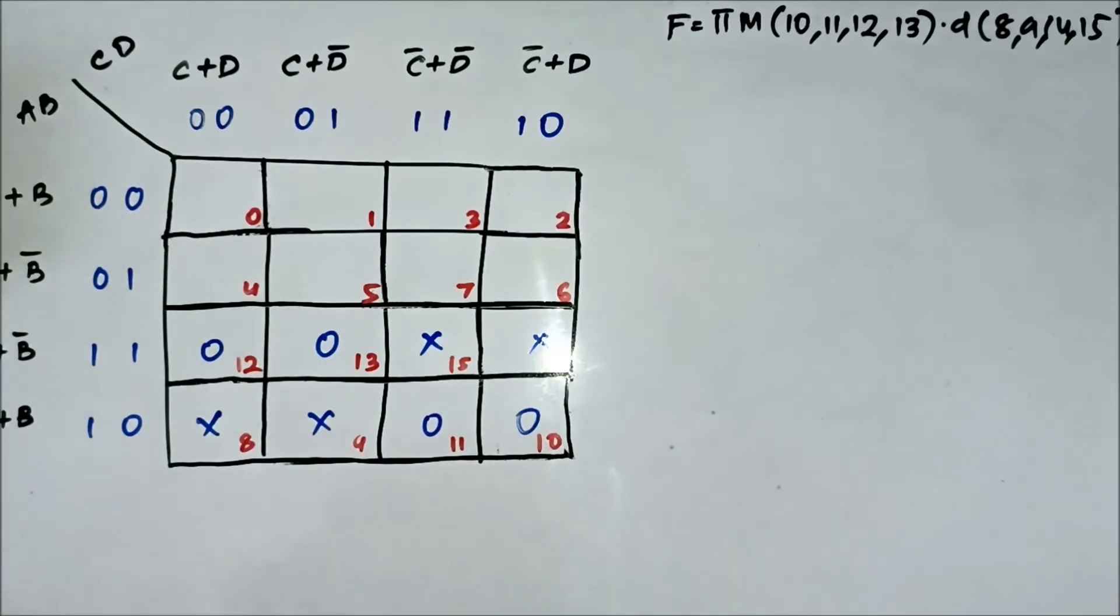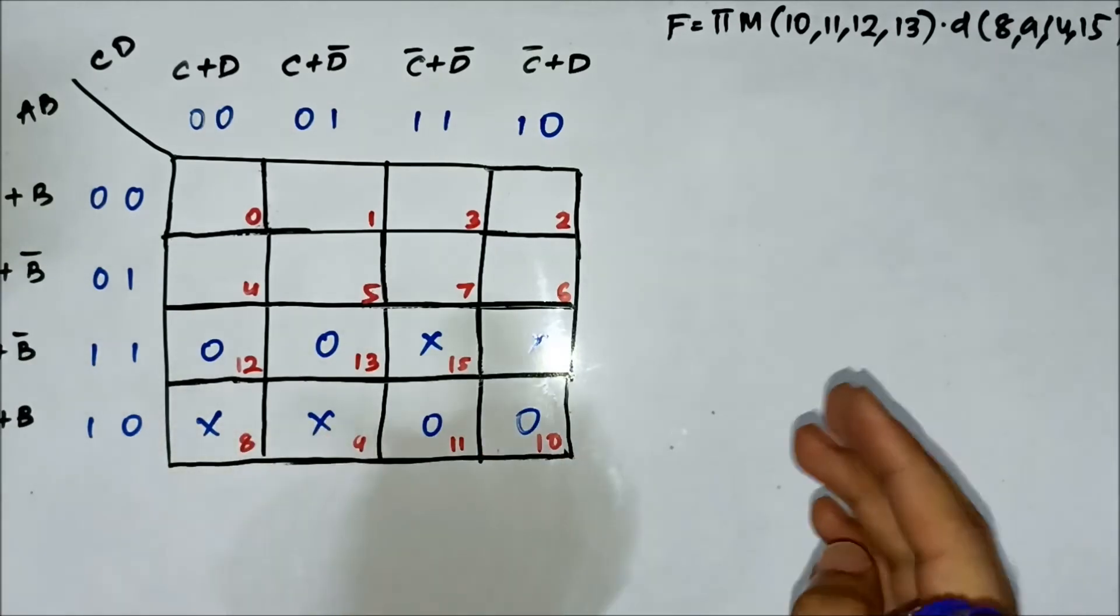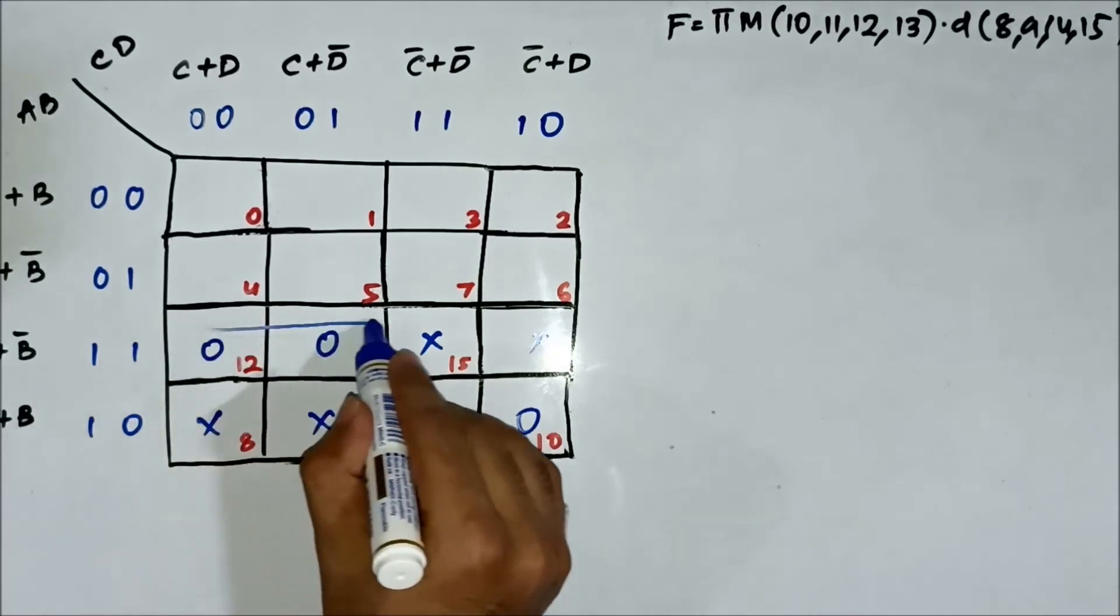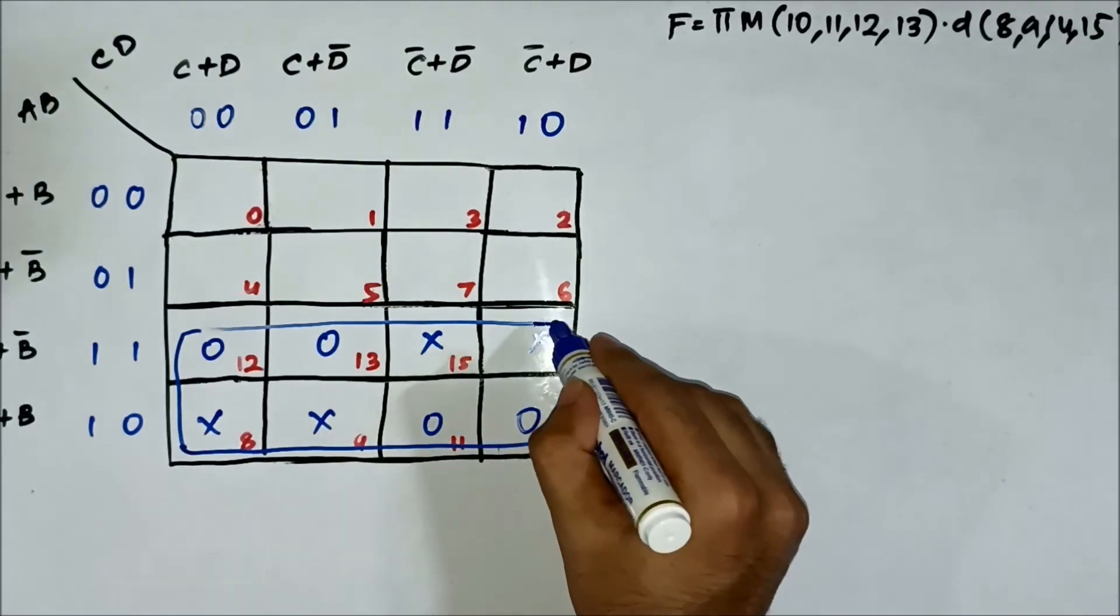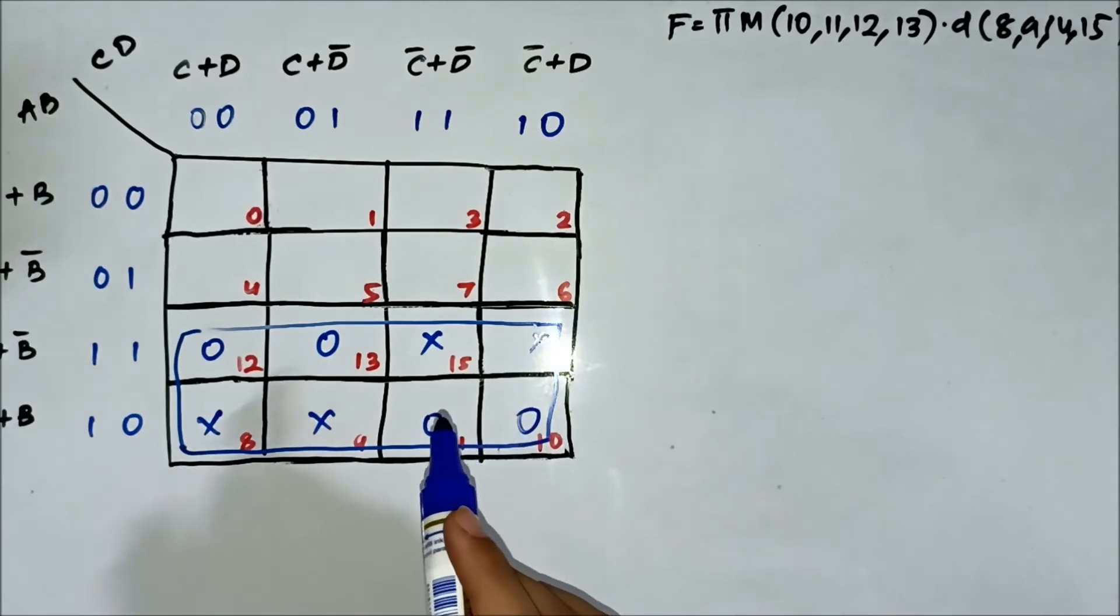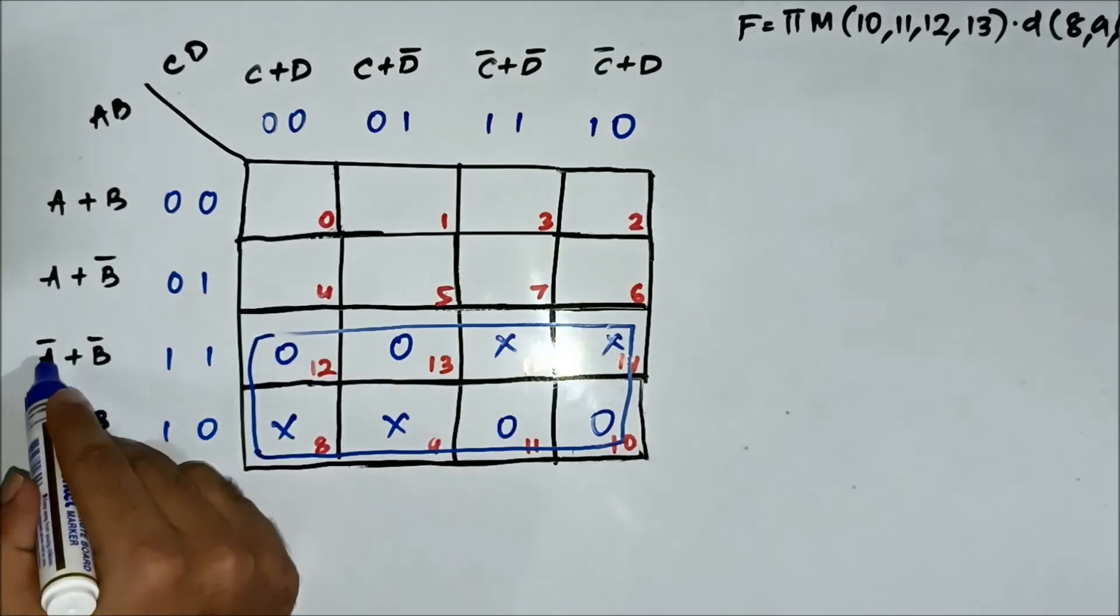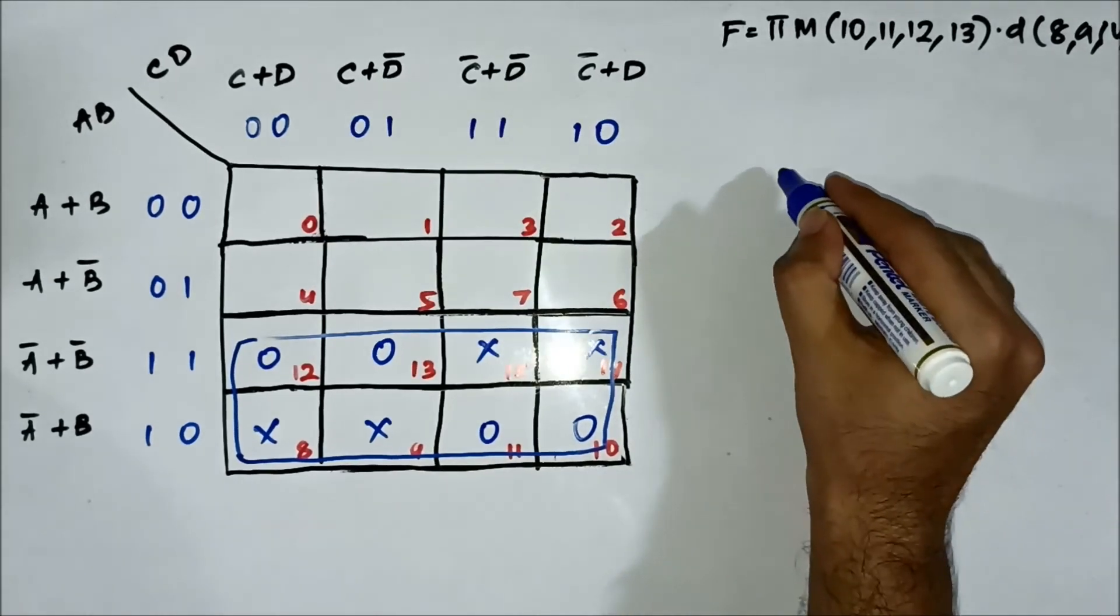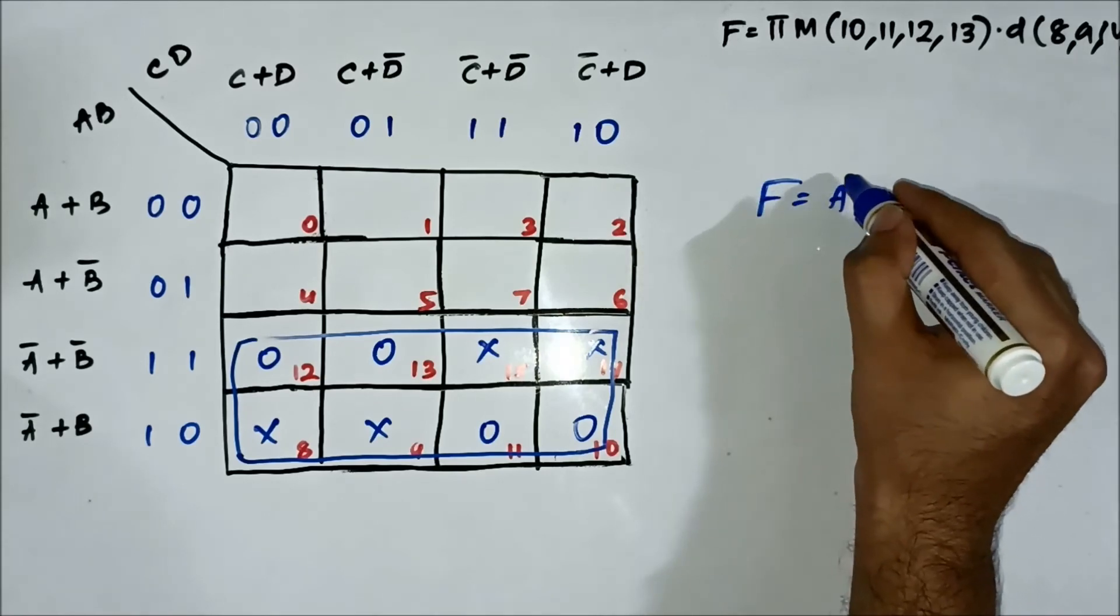Here we can combine all of these marked cells and the don't care cells to form an octet. Here we have formed an octet. Now we have to identify the common variables. In this octet in the horizontal side we have A bar common and the vertical side there is nothing common. The simplified boolean expression will be A bar.